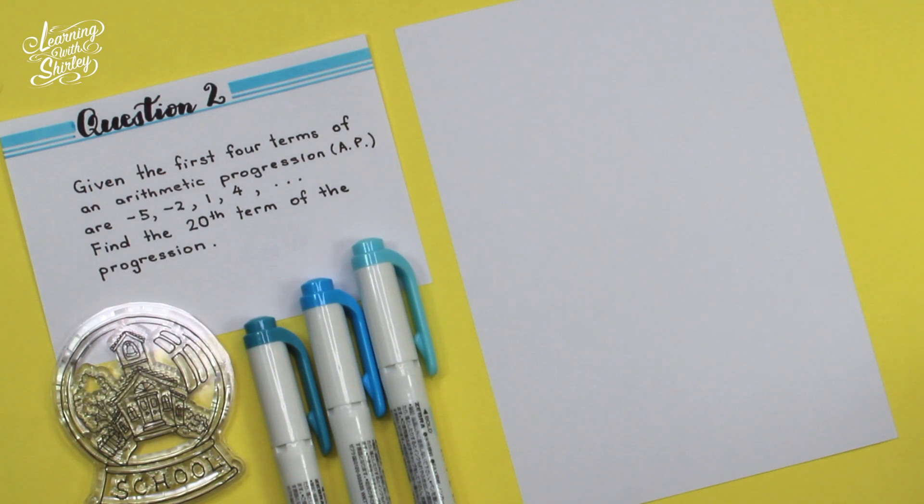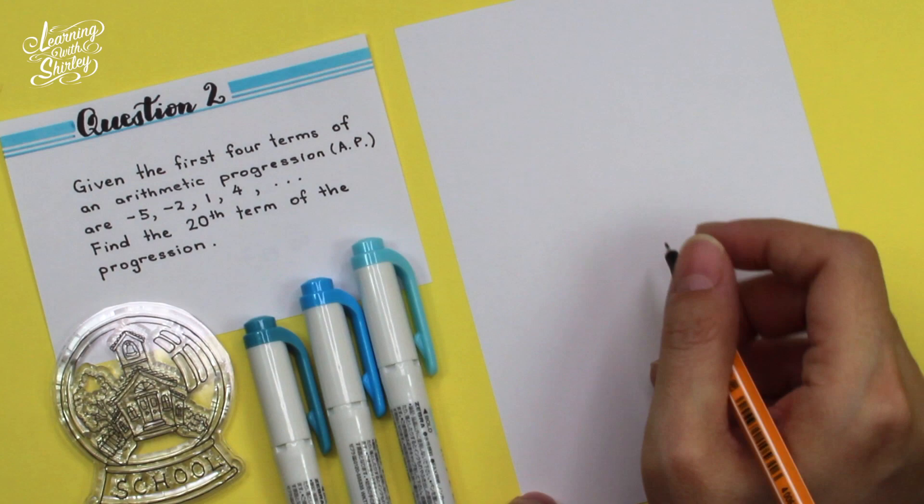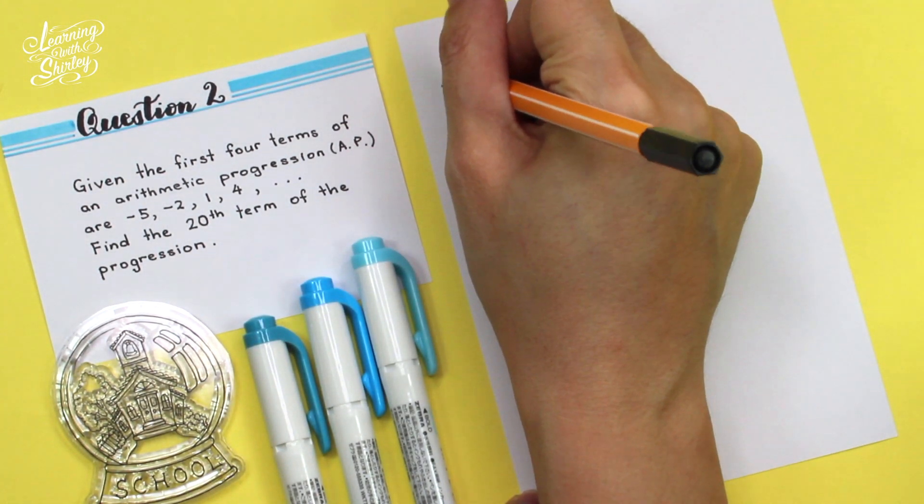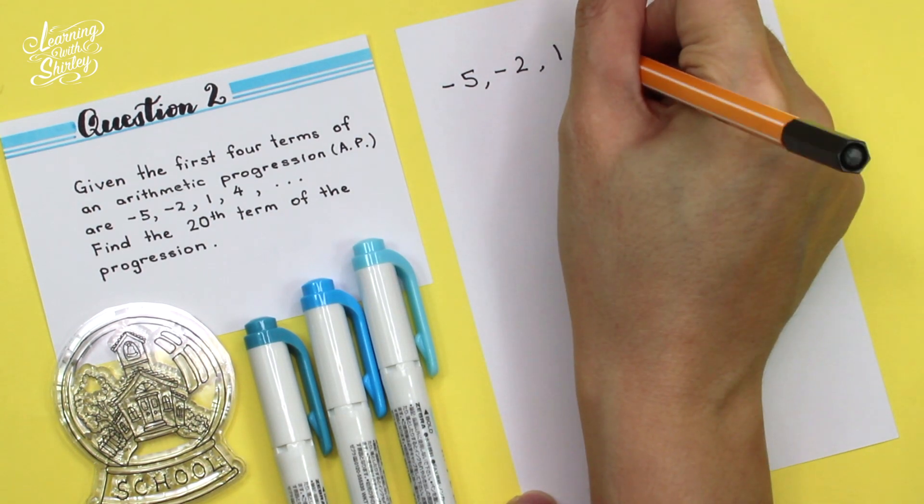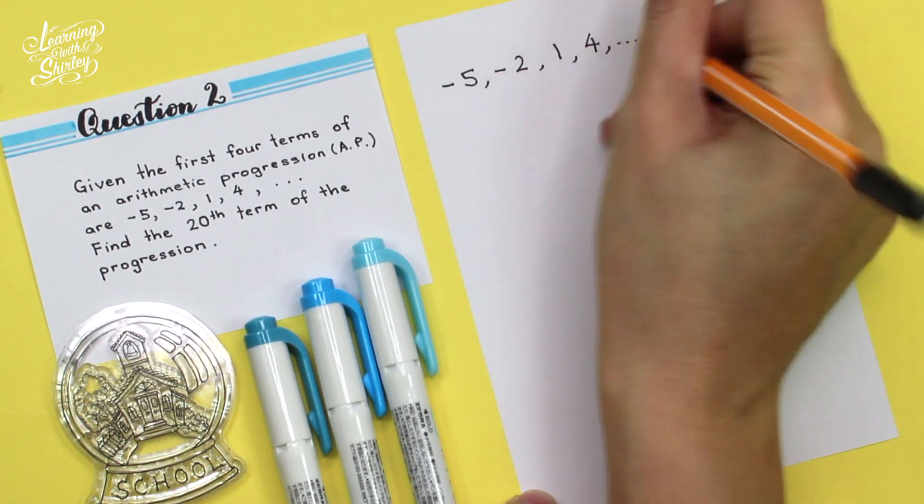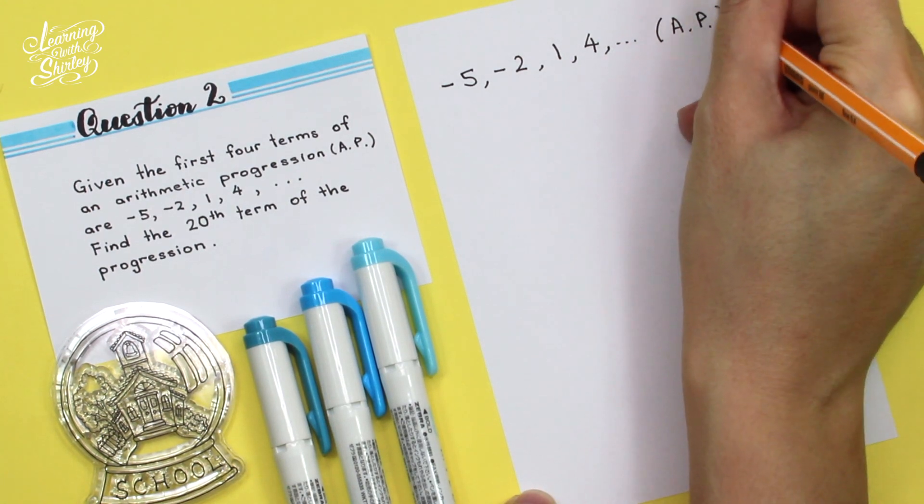For question number two, given the first four terms of an arithmetic progression AP are negative 5, negative 2, 1, 4 and so on. Find the 20th term of the progression. So let's list down the progression given, which is negative 5, negative 2, 1, 4 and so on. And this is AP, arithmetic progression.